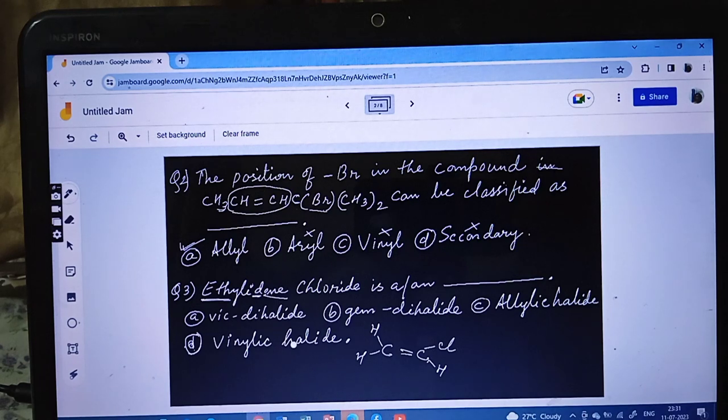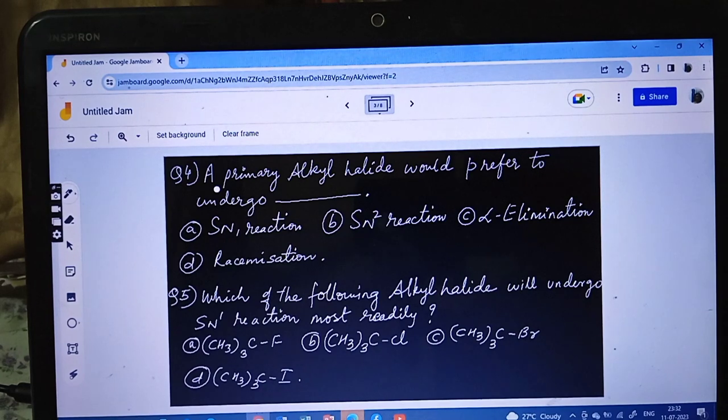So we can do one thing - replace one hydrogen with chlorine, Cl. Then this becomes geminal, because both chlorine atoms are attached to the same carbon atom. This type of attachment is called geminal. So answer should be option B. Third question B, geminal dihalide.